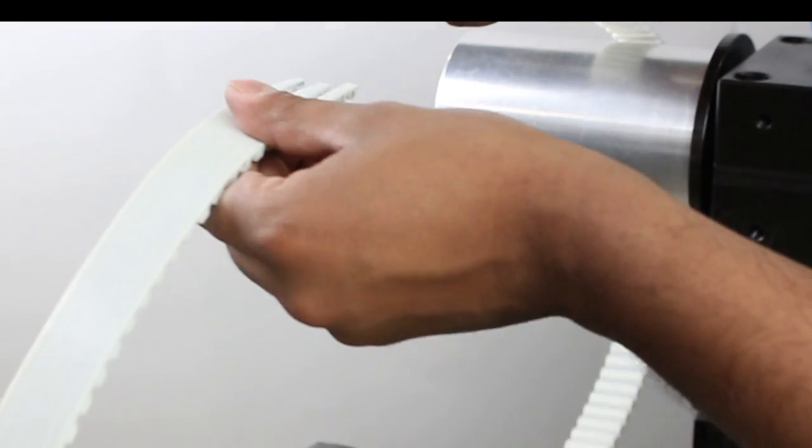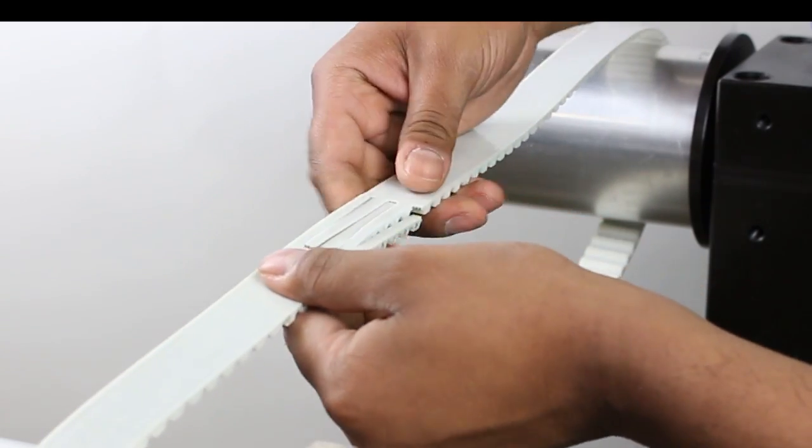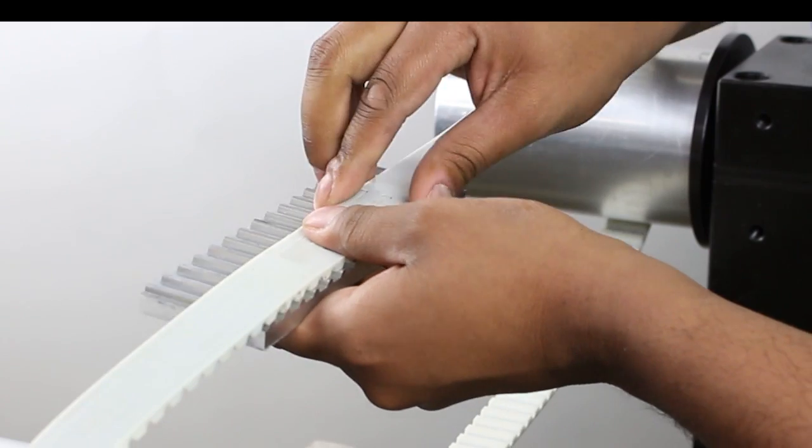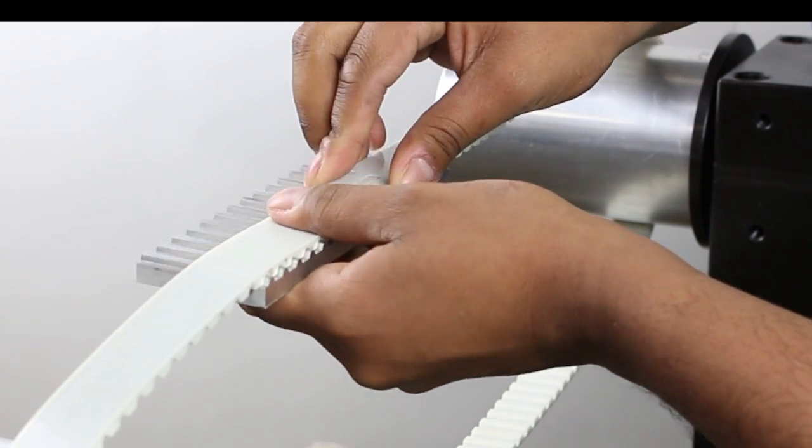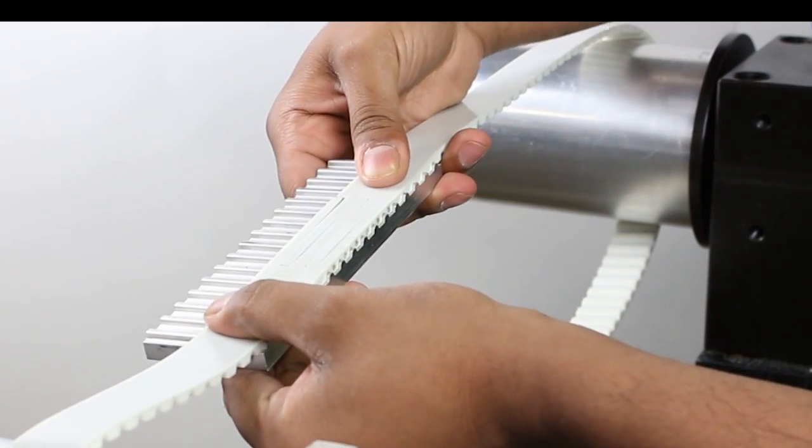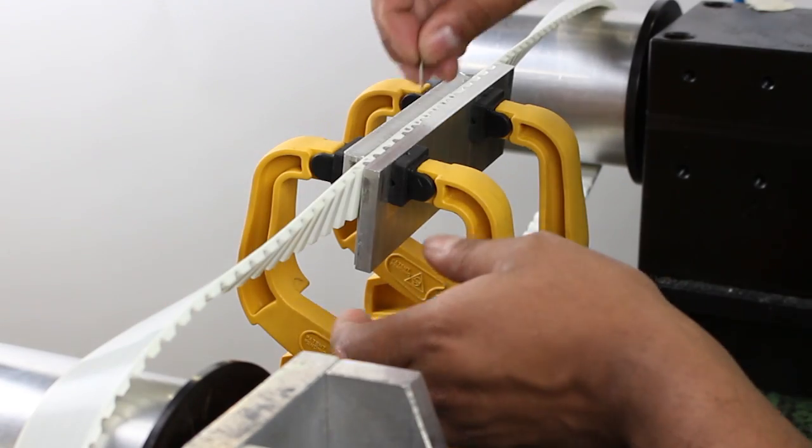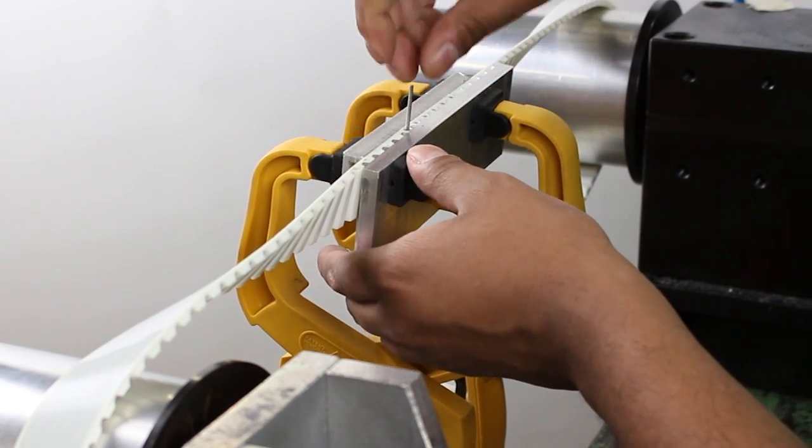The first step when connecting your pinlock belt system is to make sure that the fingers line up. Then, using a Brecoflex clamp plate for the appropriate pitch of belt that you have, make sure that the pin holes are properly aligned. Then, you should clamp the belt together in a fashion similar to what is shown here.